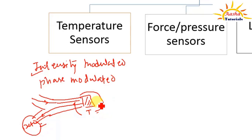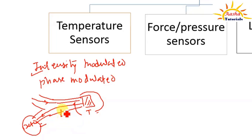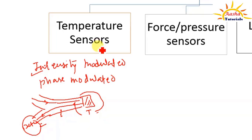In phase modulated temperature sensors, due to a change in temperature the refractive index of the optical fiber varies, causing a modulation in phase. Based on this phase modulation, we can determine the temperature.